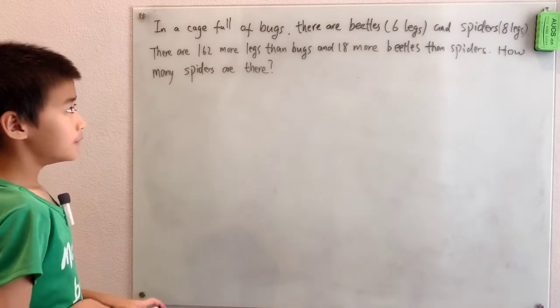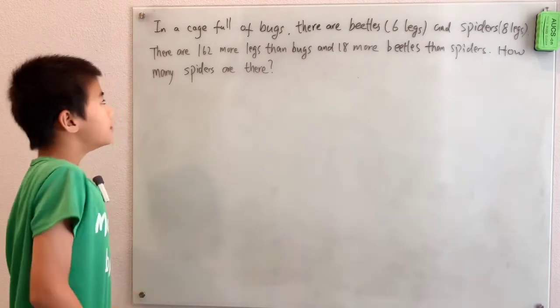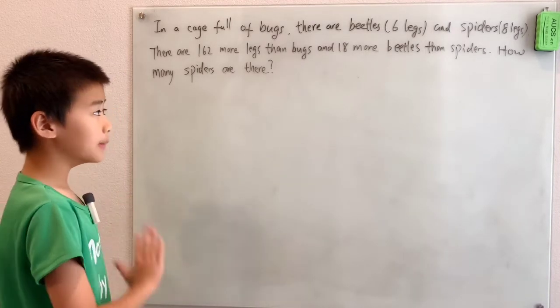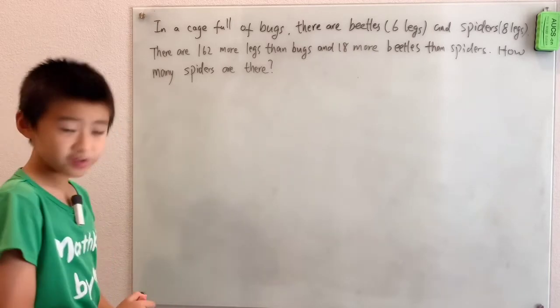In a cage full of bugs, there are beetles, which have six legs, and spiders, which have eight legs. There are 162 more legs than bugs, and 18 more beetles than spiders. How many spiders are there?